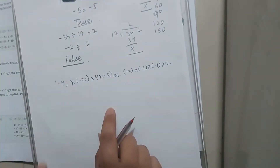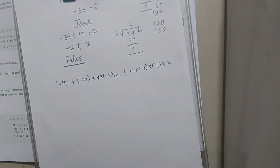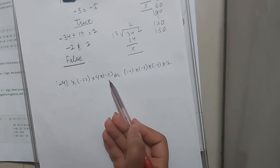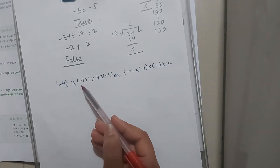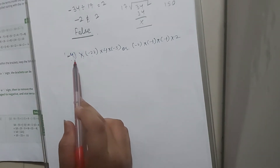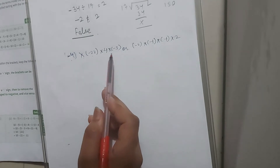Let us take the example of the first question. We simply have to multiply. As we have read earlier, if the number of negative terms is even, then the sign will be positive. But if the number of negative terms is odd, then the result will be negative. We have read this in the previous exercise. So, how many negative terms are here? 1, 2, 3. Three is an odd number, so our answer will be negative.